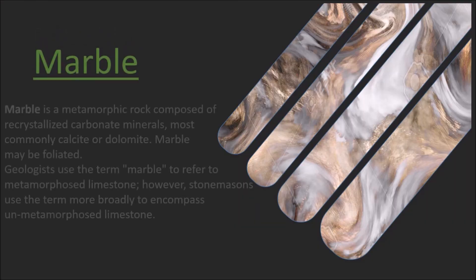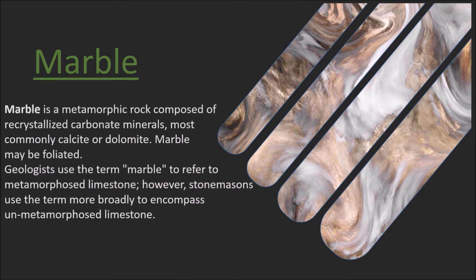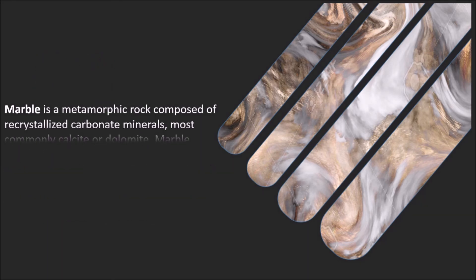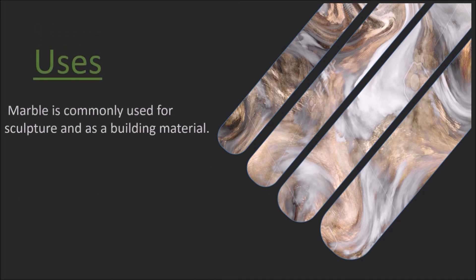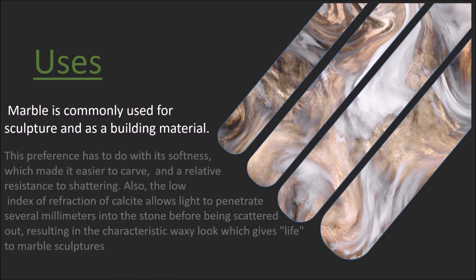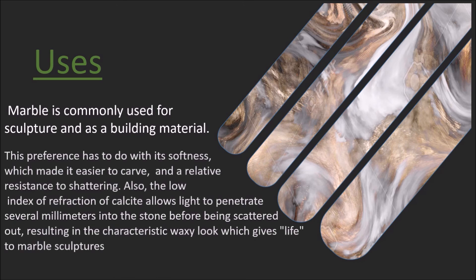Marble is a metamorphic rock composed of recrystallized carbonate minerals, most commonly calcite or dolomite. Marble may also be foliated. By its physical properties, marble is soft and can be carved easily. It has a relative resistance to shattering. Marble also contains calcite, which allows light to penetrate several millimeters into the marble, giving it a waxy look that adds life to marble sculptures.